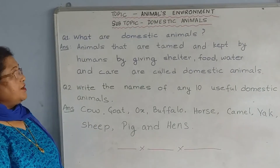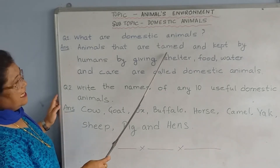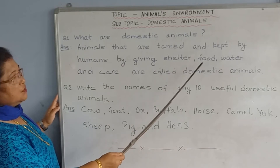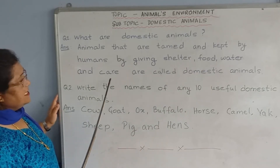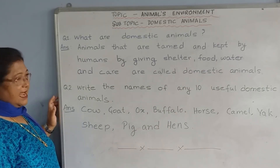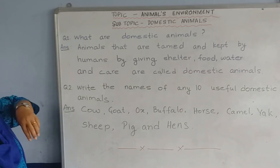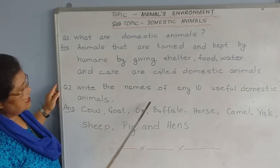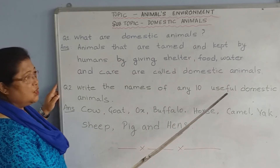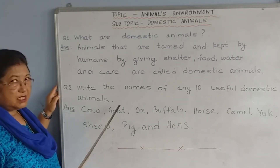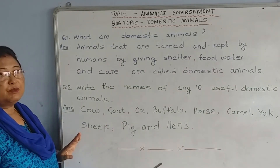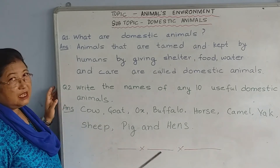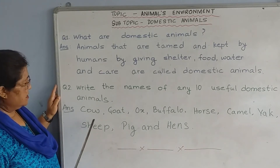Again, the animals that are tamed and kept by humans by giving shelter, food, water and care are called domestic animals. Now the next question: write the names of any ten useful domestic animals. Today we are going to learn ten useful domestic animals.